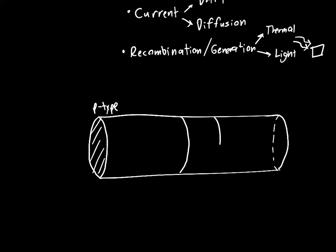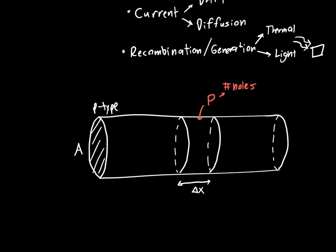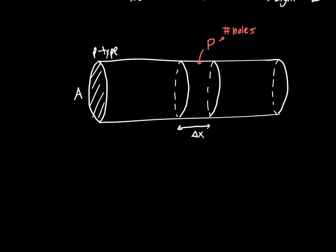Let's say we're interested in the number of holes within a certain slice of this semiconductor. The slice has a certain area — just the area of the cylinder — and a certain length delta x. We're going to say this slice has a total hole concentration P (capital P), which is just the total number of holes within this region. I find it easier to work with the total number of holes rather than the concentration for derivations.